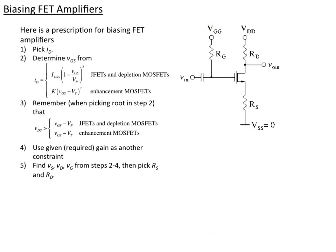So just like in the JFET case, we had a prescription for biasing it. So first you pick ID, which is the same as IS. Then we determine the VGS we want from the active region formula for the current, depending on whether we have a JFET and depletion MOSFET or an enhancement MOSFET. So we've already picked ID, so that will allow us to determine the VGS we need.